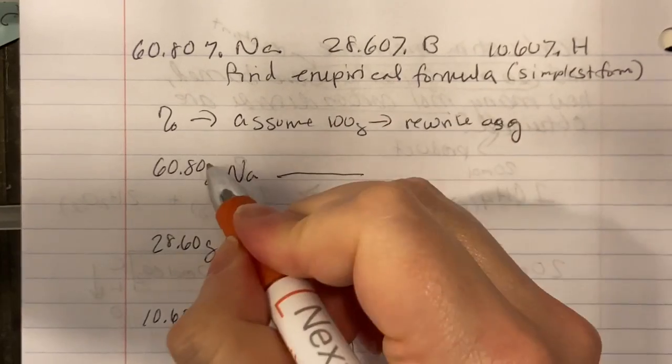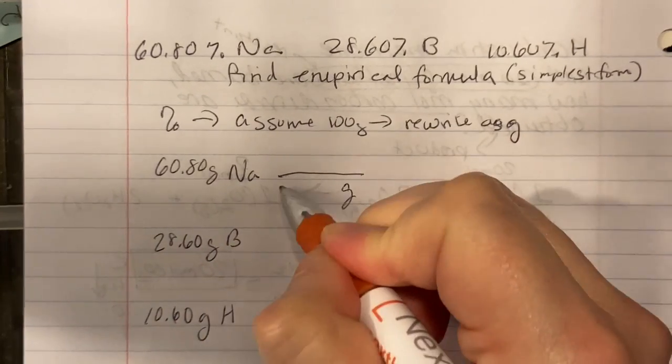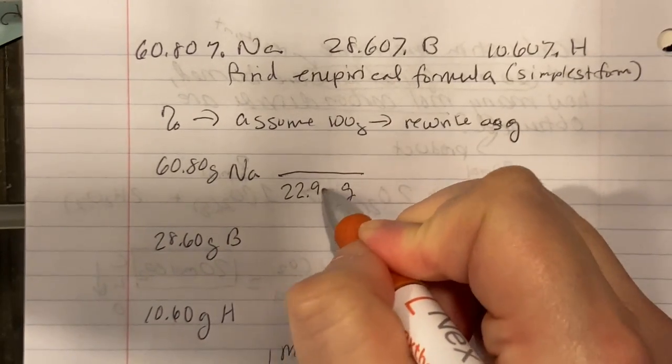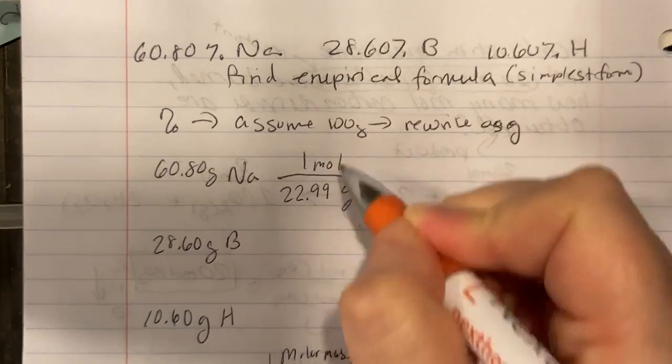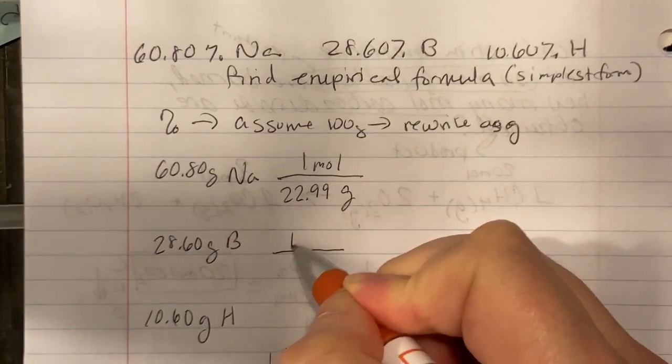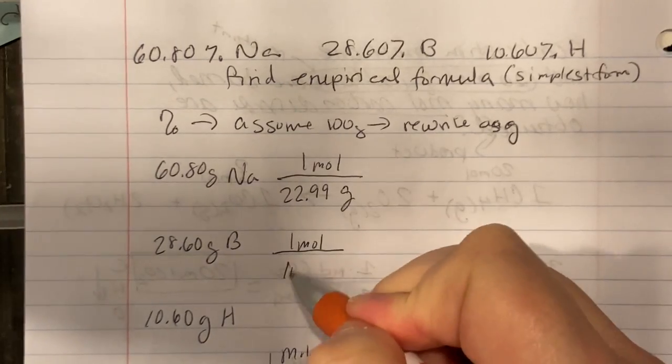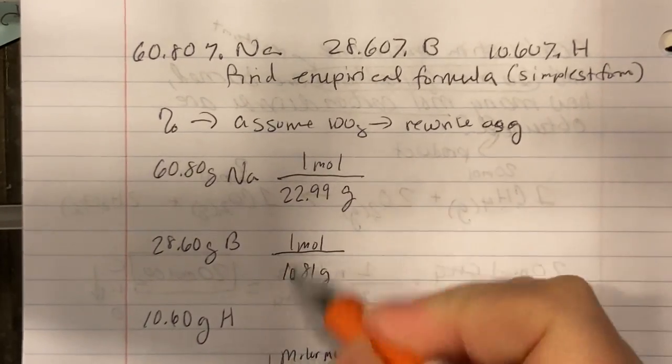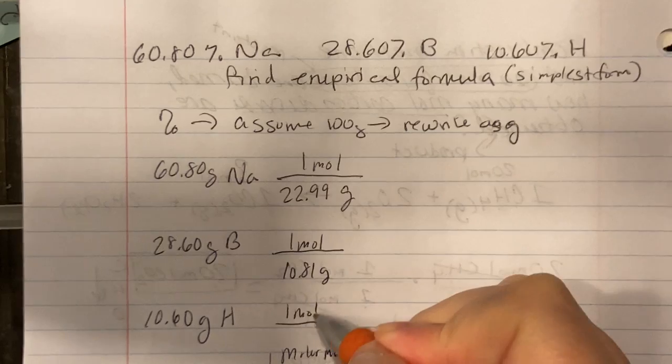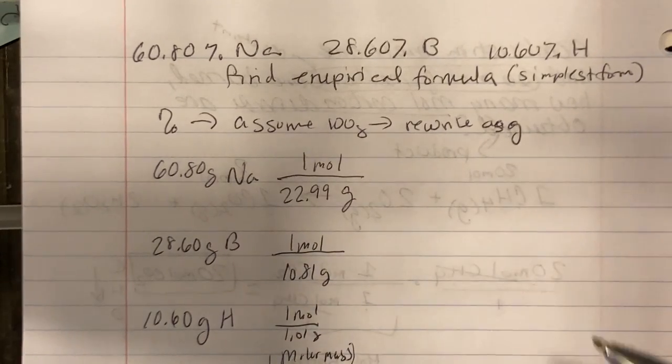Okay, sodium, grams is on the top, grams goes on the bottom. 22.99 grams in one mole. Boron has, looking on the periodic table, 10.81 grams in one mole. And hydrogen has 1.01 grams in one mole.